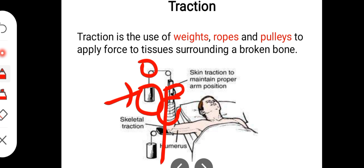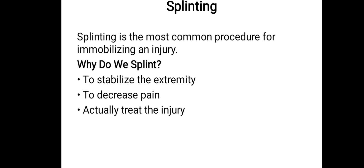Splinting is the most common procedure for immobilizing an injury. The splint supports the affected side of the body. The goal is to immobilize movement so the fracture can heal and the bone returns to proper alignment.